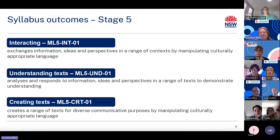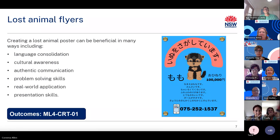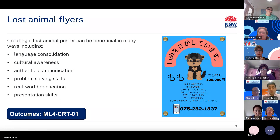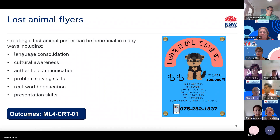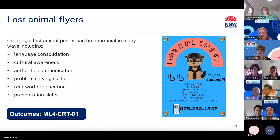Let's start with Lost Animal Flyers. When teaching a unit that includes pets or animals, have you considered including lost animal flyers? By incorporating real world tasks like creating a lost dog flyer, students have a more immersive and practical learning experience, making language acquisition more meaningful and enjoyable. Creating a lost animal flyer can be beneficial in many ways, including language consolidation — students get practical experience using vocabulary, sentence structures and language skills in a real world context.